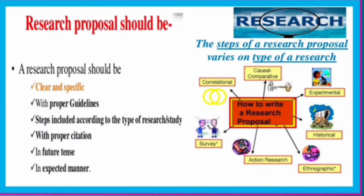The steps of a research proposal vary based on what type of research you have chosen and planned. The types of research are: experimental, historical, ethnographic, action research, survey, co-relational, and casual comparative. You choose any one that is fit for your research work.